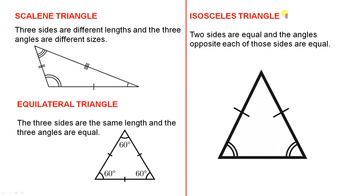Finally, we have the isosceles triangle. Two sides are equal and the angles opposite each of those sides are equal. So those two sides are equal, meaning that angle there is equal to that angle there, because the angles that are opposite the equal sides are equal. And that's why it's called an isosceles triangle.